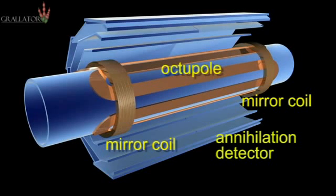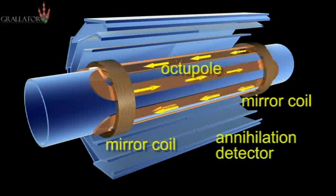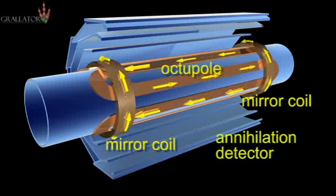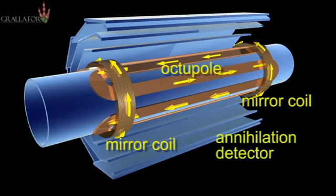They produce very strong magnetic fields that grow from the center of the apparatus. The arrows indicate the direction of the current in the superconducting magnet coils. It's about 1,000 amperes for the octopole and about 700 in each mirror coil.